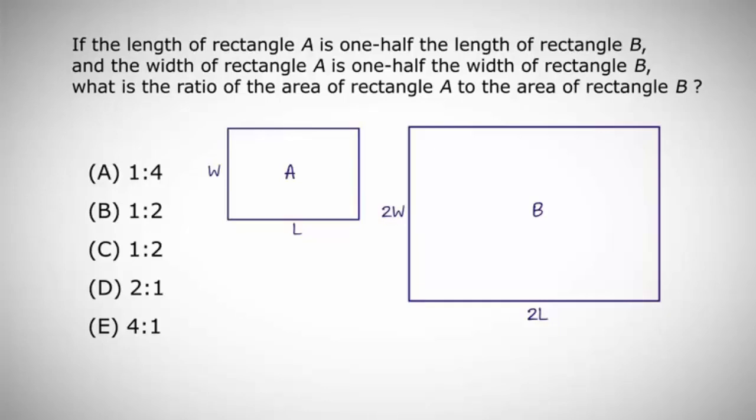The area of rectangle A is going to be L times W. The area of rectangle B will be 2L times 2W, or 4LW. The question is asking us for the ratio of area of rectangle A to the area of rectangle B. So let's rewrite what we calculated for the areas in ratio format.